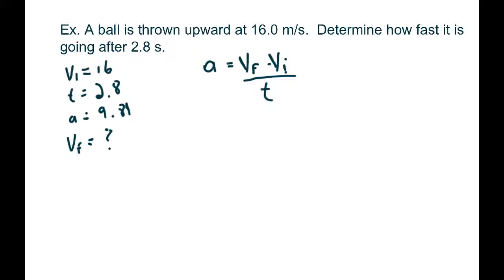Let's do a couple of examples. The first one: a ball is thrown upwards at 16 meters per second — how fast is it going after 2.8 seconds? The ball will go up, stop for a split second at the top, then turn around and fall back down. We don't know whether the ball is moving up or down at 2.8 seconds — it could still be moving upwards or already coming down. The formulas will take care of that as long as you put in all the minus signs correctly.